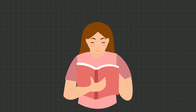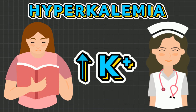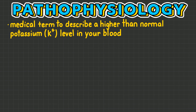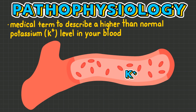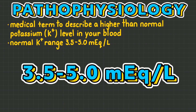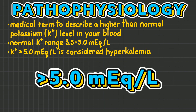If you want to learn everything you need to know as a nurse about hyperkalemia, then this is the video for you. Hyperkalemia is the medical term to describe a higher than normal potassium level in your blood. The normal potassium range is 3.5 to 5 milliequivalents per liter, and therefore anything greater than 5 milliequivalents per liter is considered hyperkalemia.